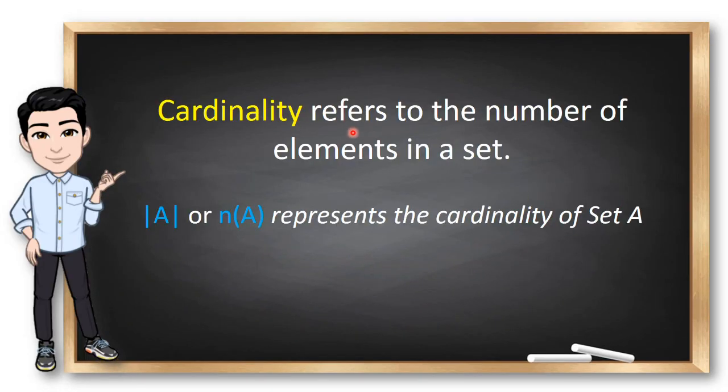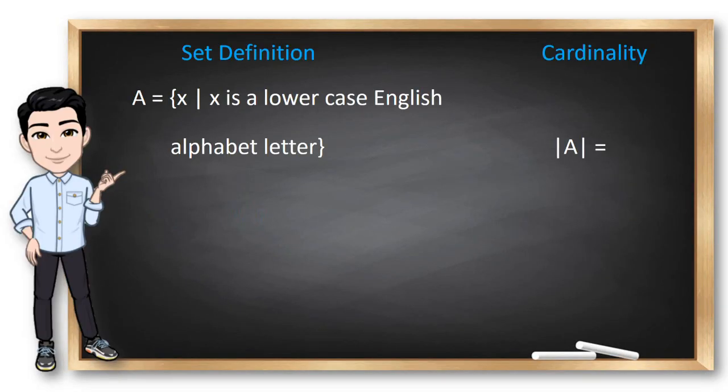The cardinality of set refers to the number of elements in a set. So, we can use either of these two symbols to represent the cardinality of set A. Now, why don't we try these examples? Let the set A be a set containing x such that x is a lowercase English alphabet letter. Okay. So, all we need to do here is to count the alphabets in English, right? So, there are about 26. So, the cardinality of A is 26.